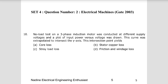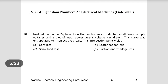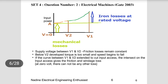Question 2: A no-load test on a three phase induction motor was conducted at different supply frequencies and a plot of input power versus voltage was drawn. The curve was extrapolated to intersect the y-axis. The intersection point yields what? The no-load test is done by giving different supply voltages. In the graph, x-axis is voltage and y-axis is input power. V1 is the rated voltage.